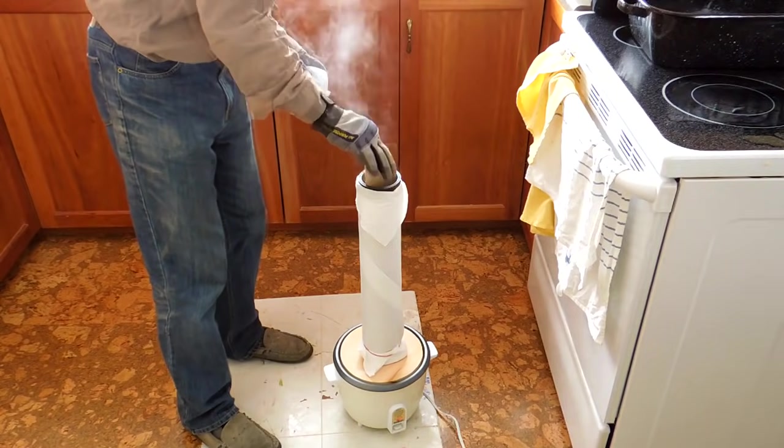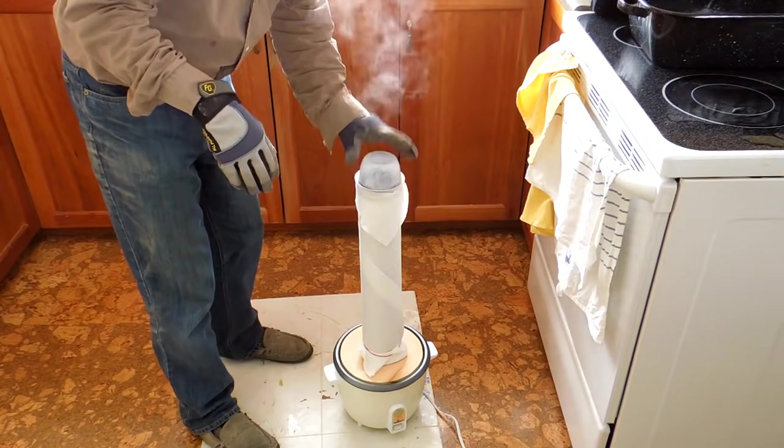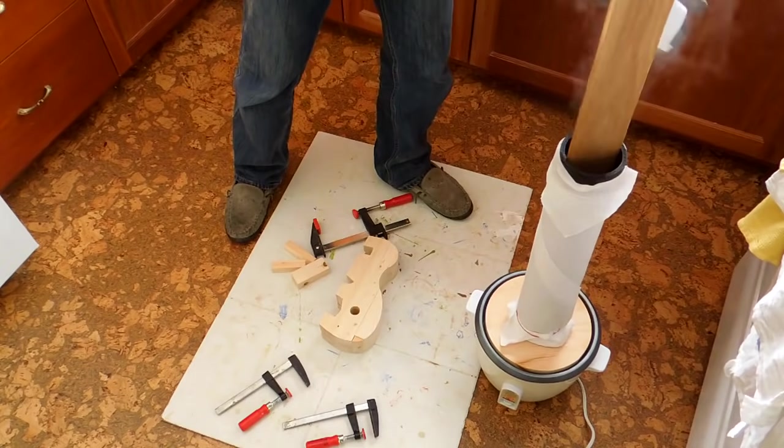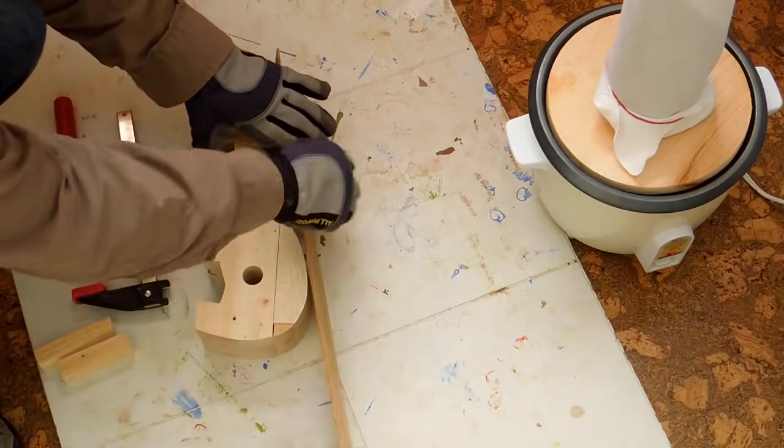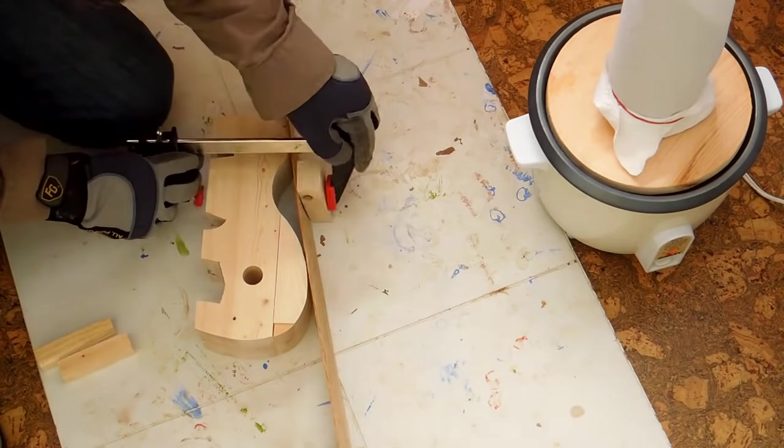I rigged up this steamer on my rice cooker. It's just a piece of ABS pipe wrapped in paper towel to keep it warm. After steaming the wood for about 10 minutes I clamp it to my bending form.